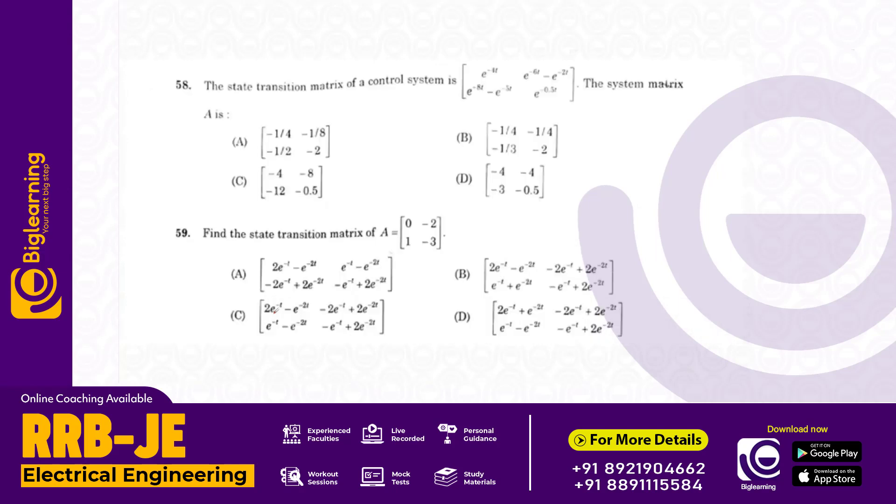The state transmission matrix of a control system is given by e raised to minus 4t, e raised to 6t minus e raised to minus 2t, e raised to minus 8t minus e raised to minus 5t into e raised to minus 0.5t. The system matrix A simplifies to answer D.